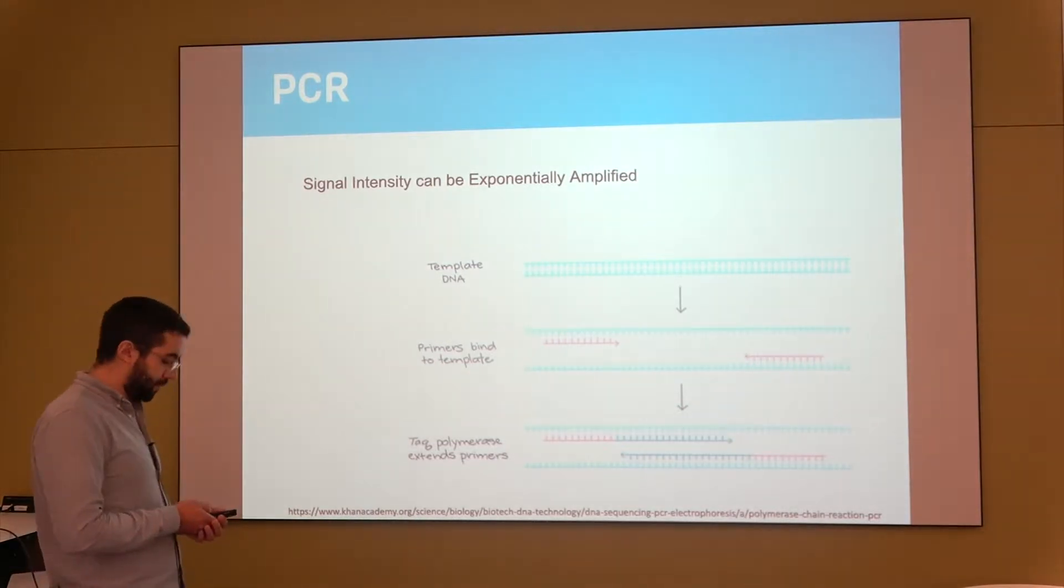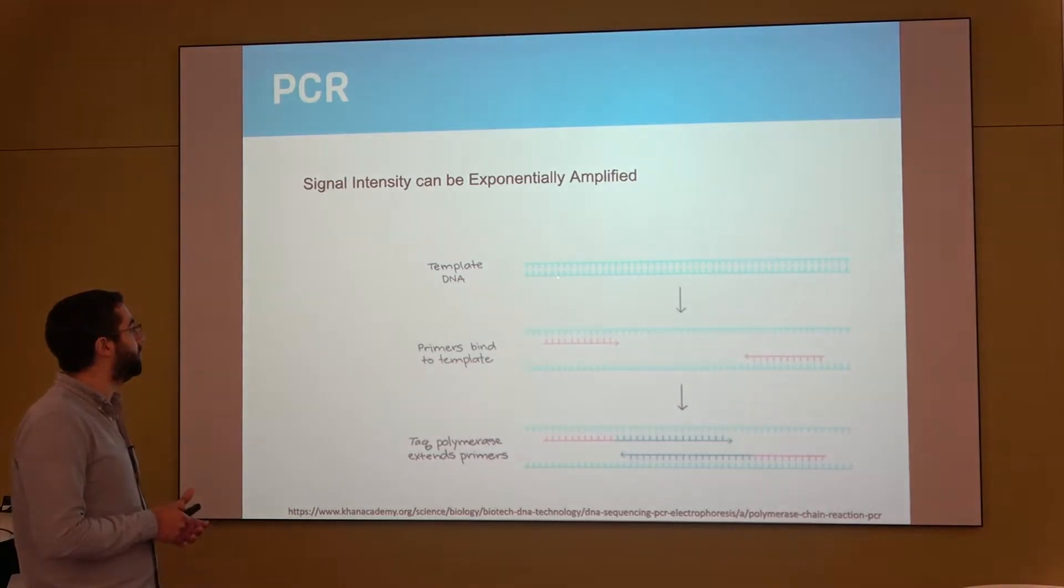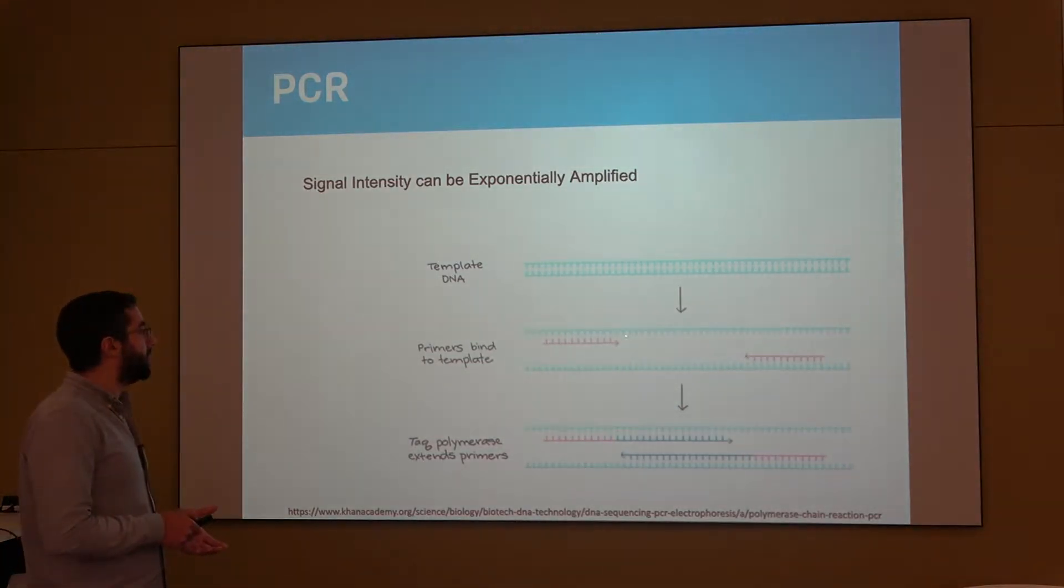So how does that work? Initially you have a template of DNA which you can separate into two templates, then add these smaller fragments of DNA which we talked before called primers, and then polymerases again will start copying the original DNA in each one of these directions. So after one cycle of this you will end up going from one single strand of DNA to two.